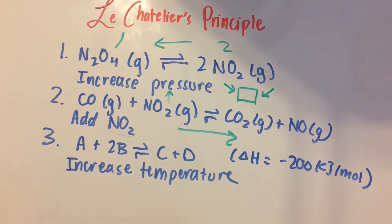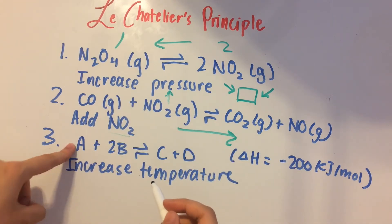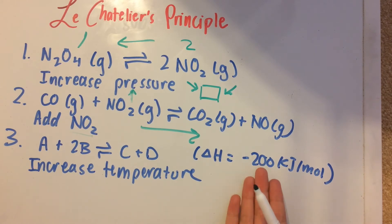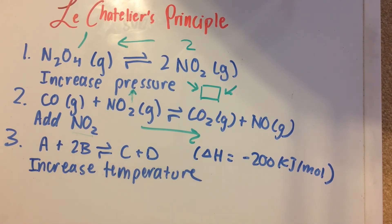Pretty easy, right? So the last one is I just put in some letters instead of actual compounds. And we're going to have one mole of A and two moles of B in dynamic equilibrium with C and D. And over here, we're given that the equation is exothermic. The forward reaction is exothermic, I mean.